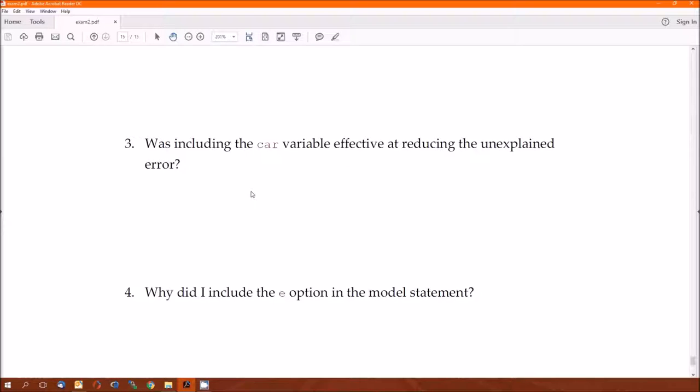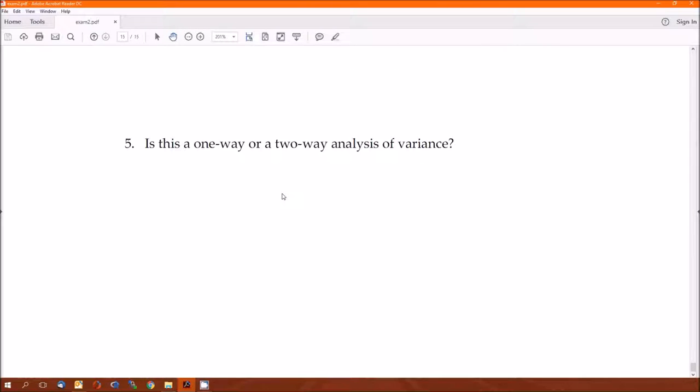Three: why did I include the E option? I think everybody got this right. It's to get the order of the factors and the combinations of factor levels. And five: is this a one way or two way? This is indeed a two way. And that was the end of the SAS part.